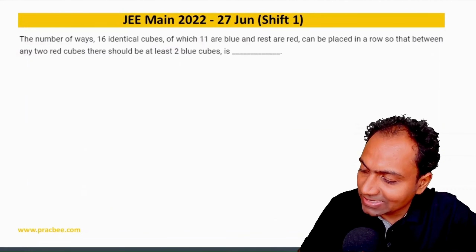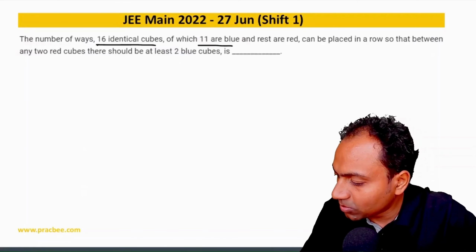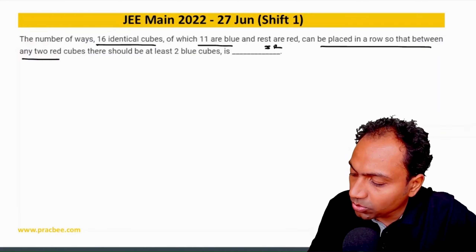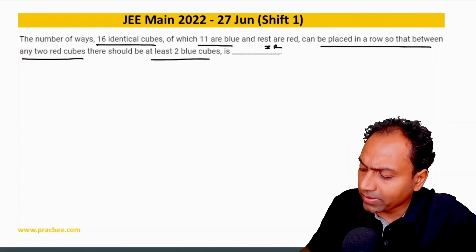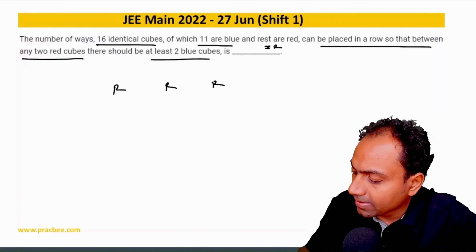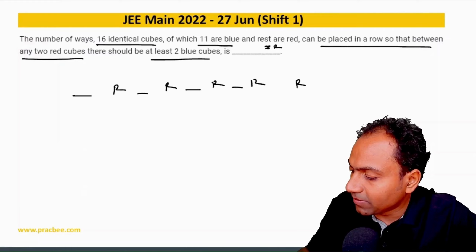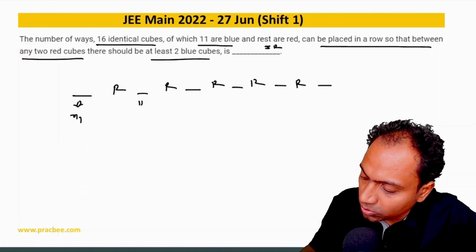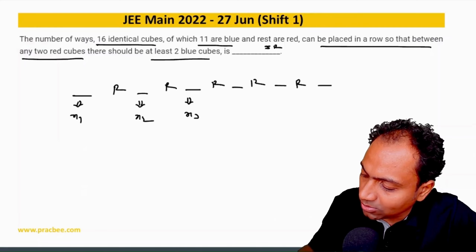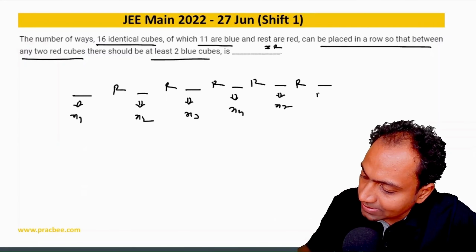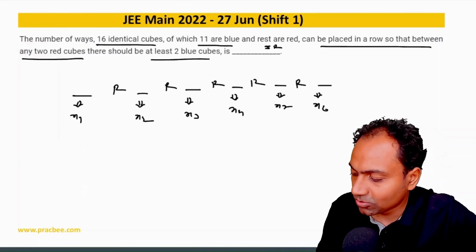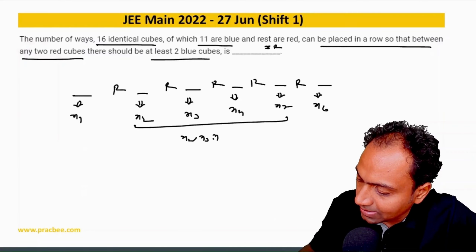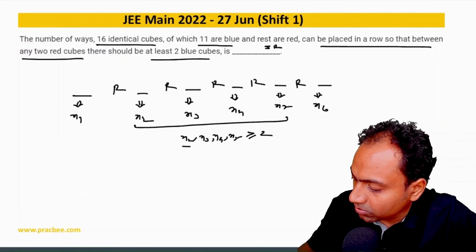This 2022 question is very interesting: there are 16 identical cubes, 11 blue and 5 red, to be arranged in a row such that between any two red cubes there are at least two blue cubes. Placing 5 reds in a row creates 6 gaps. Let x1 through x6 be the blue cubes filling each gap, with x2, x3, x4, x5 each ≥ 2.